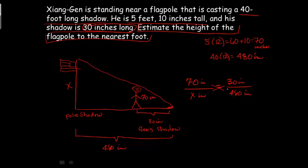Now you just do your cross multiplying, and 70 times 480 is going to give me 33,600, and then that's going to equal 30x. Divide both sides by 30, and x is going to be 1,120 inches.